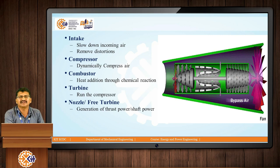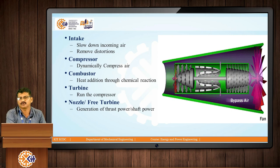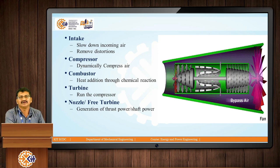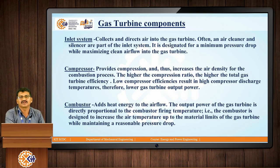Generally in jet propulsion, these same 3 components are used: first the compressor, then the combustion chamber, and then the turbine. For jet propulsion, we use these 4 processes: intake, compressor, combustor, and turbine. These are the basic components of any gas turbine power plant.